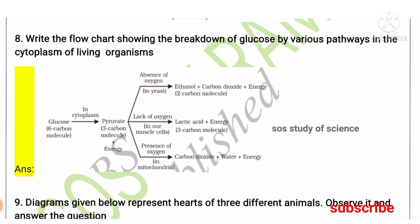The next question presents a flow chart of the breakdown of glucose by various pathways in the cytoplasm. Glucose, a six-carbon molecule, breaks down in the cytoplasm into a three-carbon molecule. In the presence of oxygen, this pyruvate breaks down to release carbon dioxide, water, and energy. In the absence of oxygen, it releases ethanol, carbon dioxide, and energy. Aerobic respiration occurs in the presence of oxygen; anaerobic respiration occurs in the absence of oxygen, releasing ethanol, carbon dioxide, and energy.